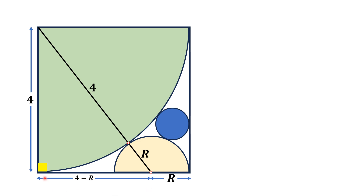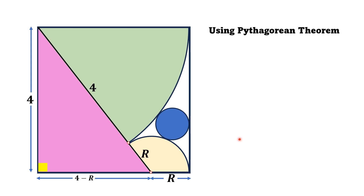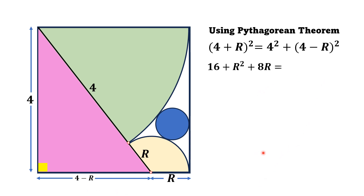This angle is 90 degrees because it is a square. From this right triangle, the hypotenuse is 4 plus R, one leg is 4, and the other leg is 4 minus R. Using the Pythagorean theorem, we have (4 + R)² = 4² + (4 − R)². Expanding the left side gives 16 + R² + 8R.